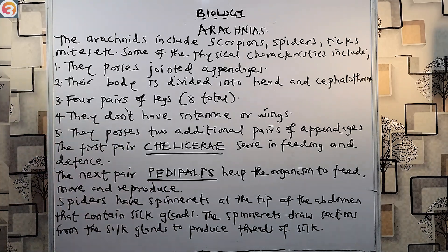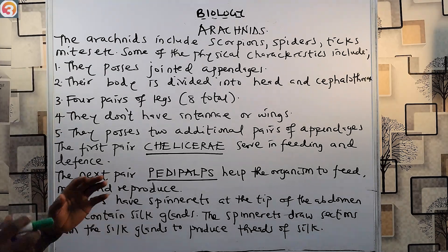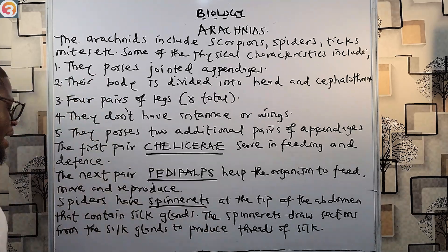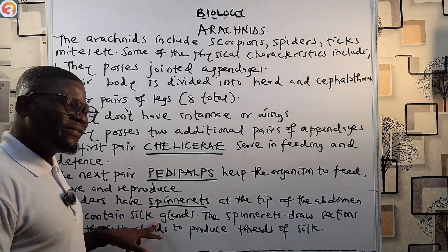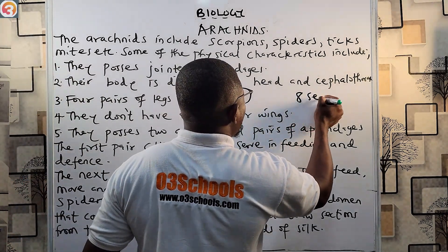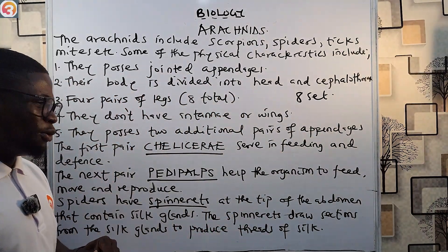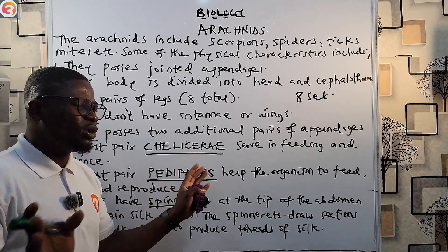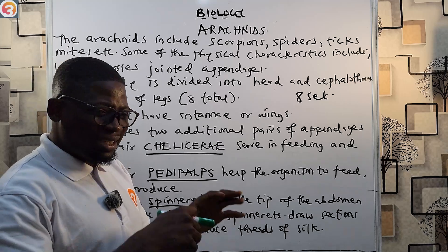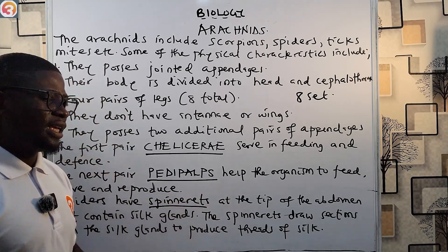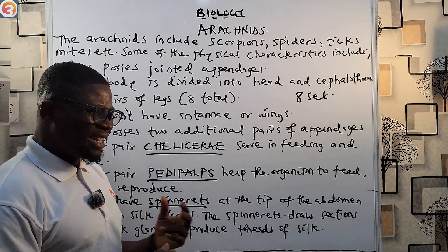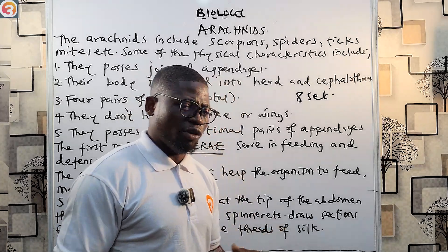Spiders have spinnerets at the tip of the abdomen. These spinnerets contain silk glands — a spider can have up to eight sets of silk glands that produce silk used for different purposes. The spinnerets draw secretions from the silk glands to produce threads of silk.